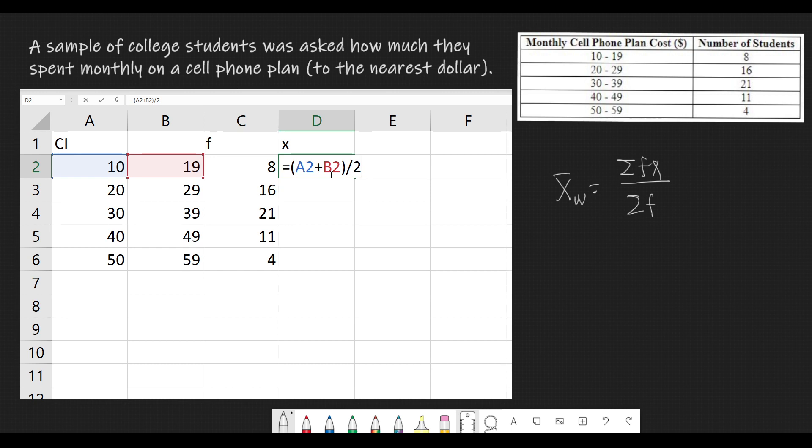Divided by 2, press enter, we get 14.5. After that, we drag everything down to get the midpoints of each row.